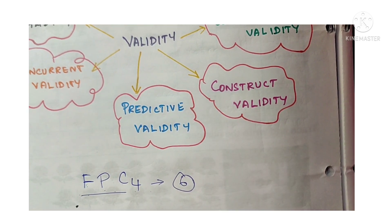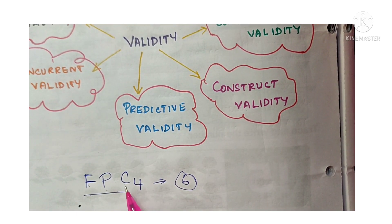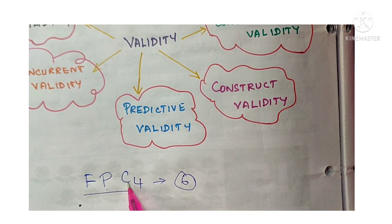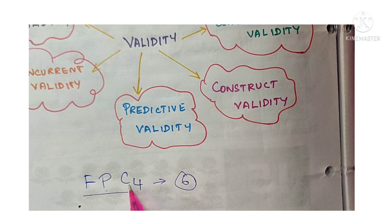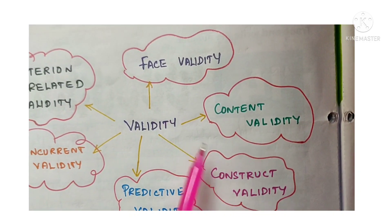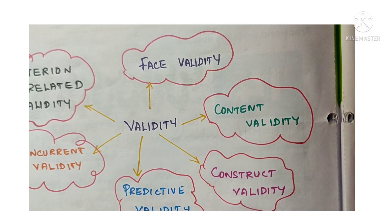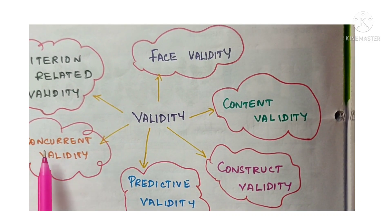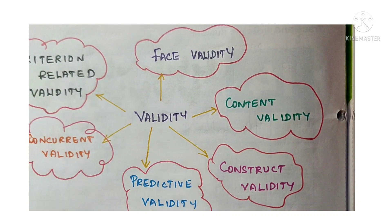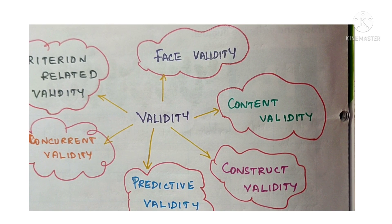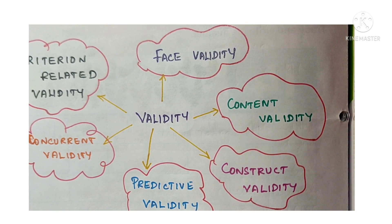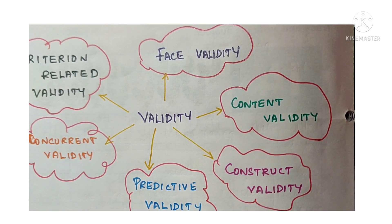The six types are: face validity, predictive validity, content validity, construct validity, concurrent validity, and criterion-related validity. Let us see each type in detail.